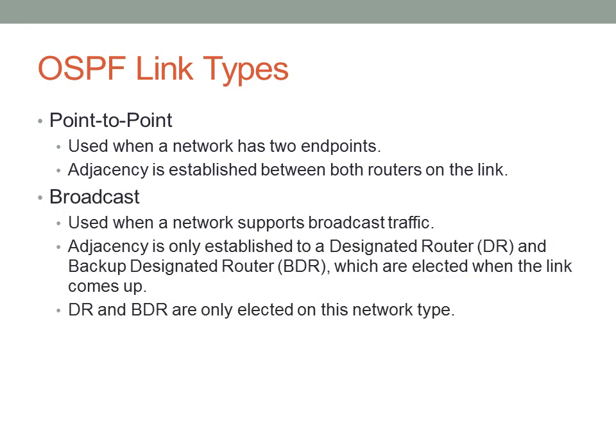Broadcast domains are a little more complicated. When a network supports broadcast traffic, you ideally don't want to establish an adjacency between every single router on the same broadcast network. The primary reason is that the number of adjacencies increases exponentially as the number of routers increases — with ten routers, every single router would have nine adjacencies, giving you 90 different adjacencies total. So on a broadcast network like Ethernet, you have a designated router (DR) and a backup designated router (BDR). Rather than establishing adjacencies with every other router, each router only establishes adjacencies with the DR and BDR, which prevents an excessive number of adjacencies from being formed.